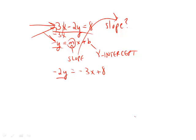Next, we divide by negative 2. Remember, we want to get the y by itself. And we get y is equal to 3 halves x plus 4.